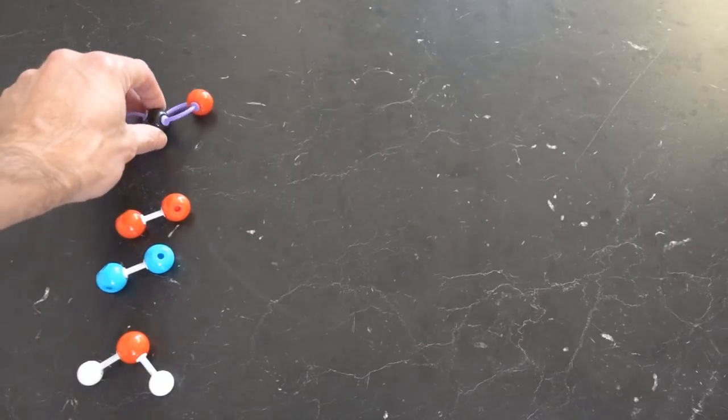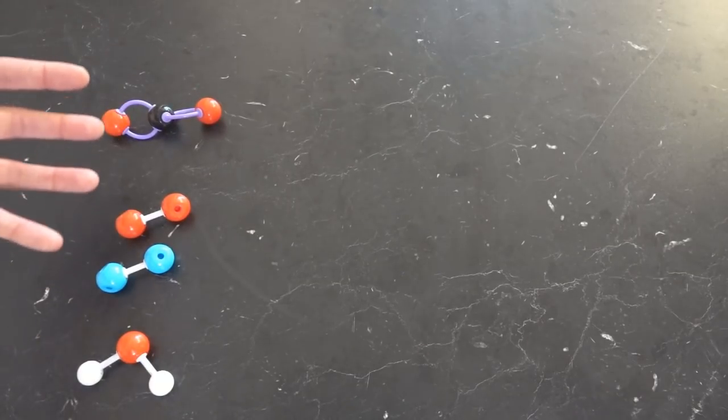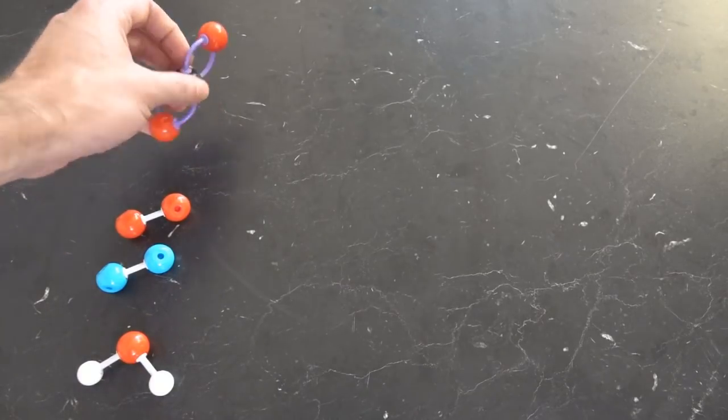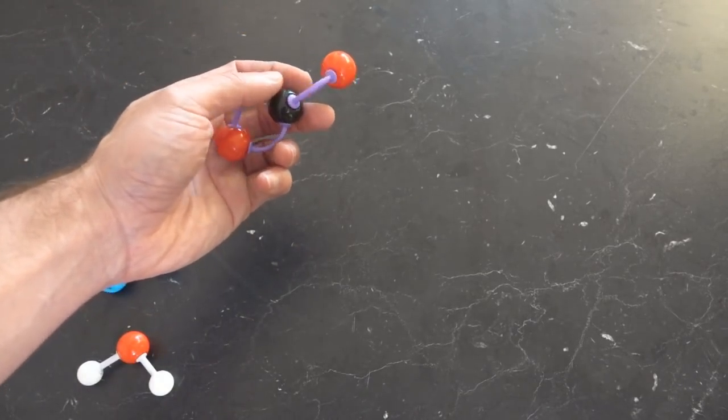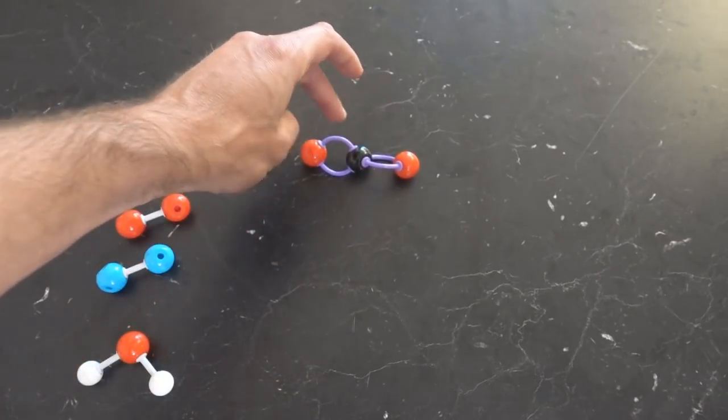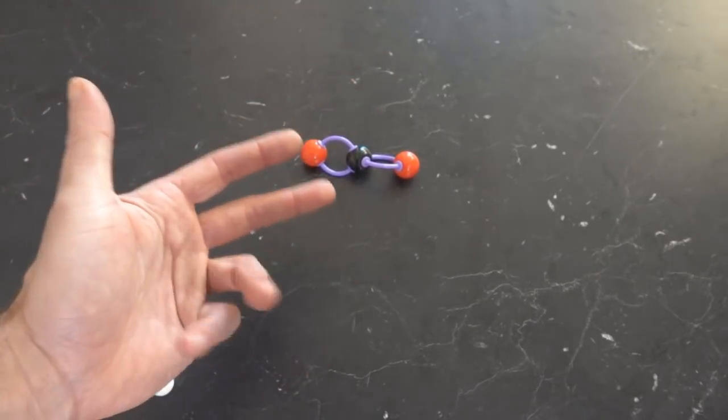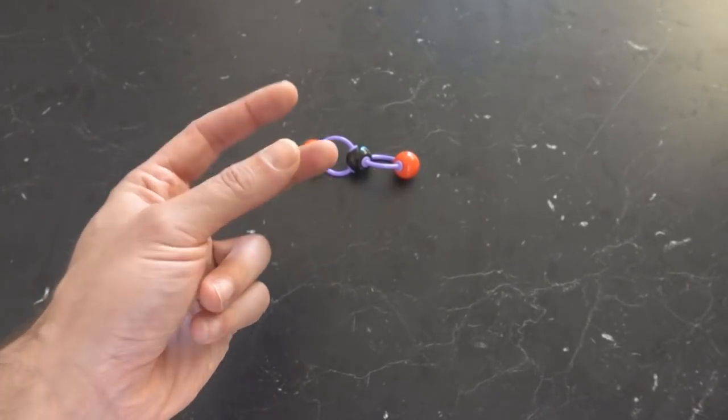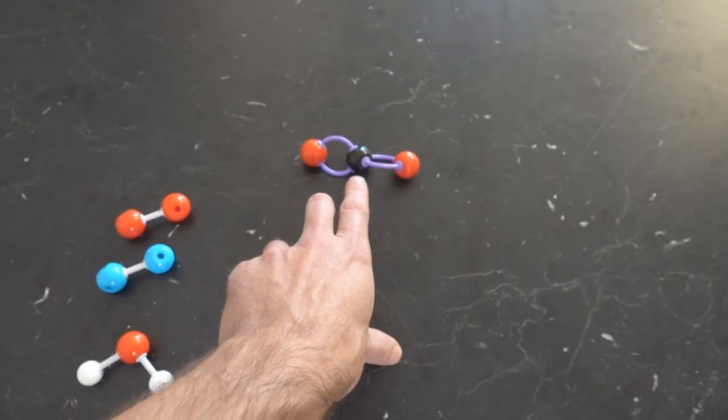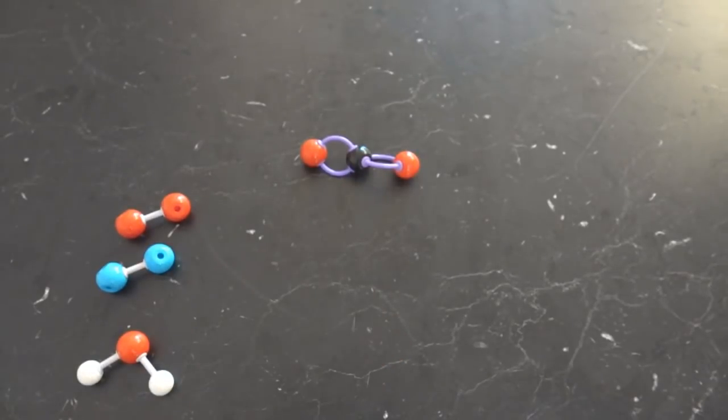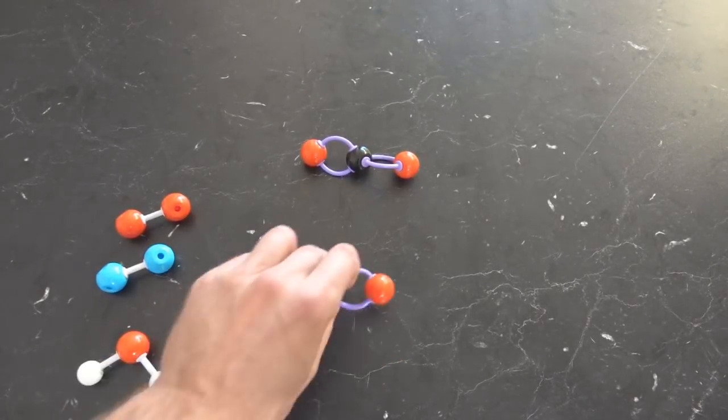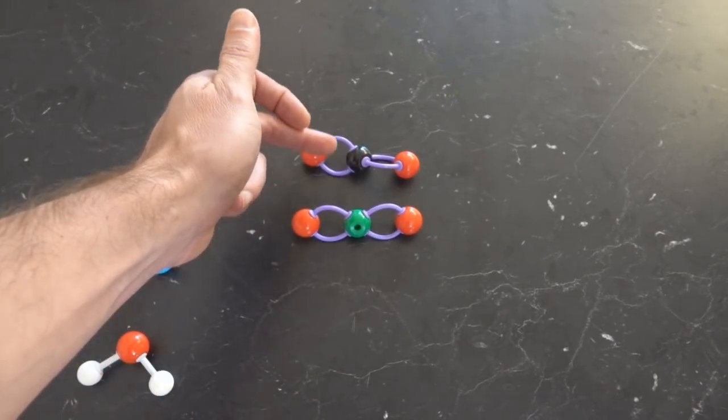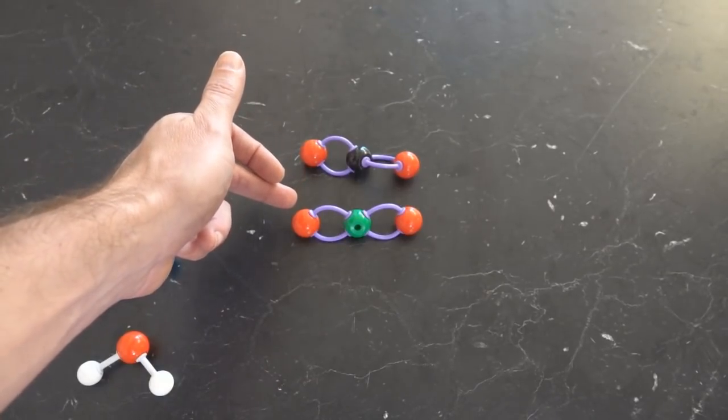But this isn't much use. You could do this with much simpler and cheaper methods. What I want to do is label one of these with an isotope. Just like the uranium-235 and 238, they have the same chemical properties, but they weigh different amounts. You can get a different isotope of carbon here. For instance, carbon-13. So this weighs slightly more than this. So this weighs 44. This weighs 45.